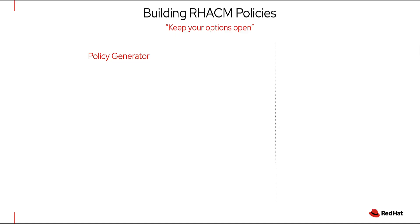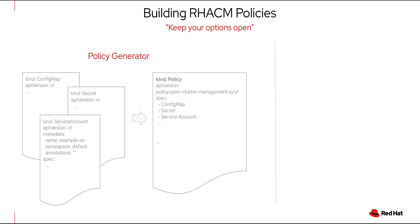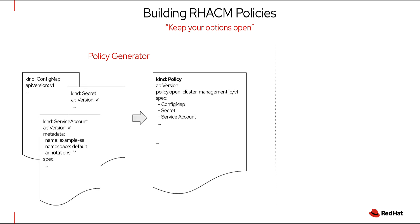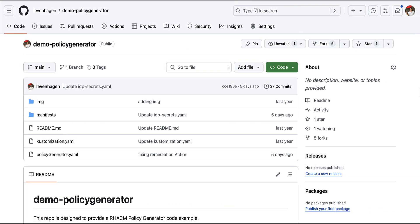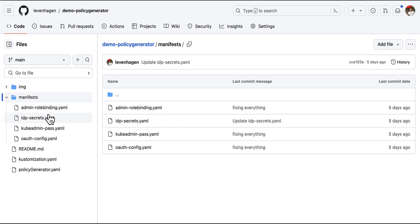Now, if you want to build policies but didn't find a template that fits your needs or don't want to worry about writing policy code, there are two other great ways to work with policies in ACM. One is using the Policy Generator. The benefit is that you only need to work with native Kubernetes resources you want to configure, and ACM's Policy Generator will wrap it all into a policy for you. You simply keep your Kubernetes manifests in a GitHub repo — in this example, the goal is to configure a common identity provider across all clusters.